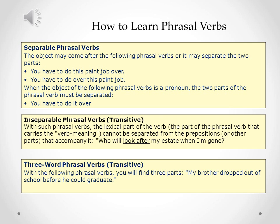Now, there are three types of phrasal verbs. The first one is separable phrasal verbs. The second one is inseparable phrasal verbs, with the use of transitive verbs. And the third type is three-word phrasal verbs, which means that the object may come after the phrasal verb, or it may separate the two parts.